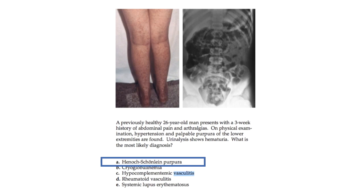Complications of Henoch-Schönlein purpura include hypertension, glomerulonephritis, and GI hemorrhage. The imaging shown demonstrates dilated loops of bowel suggesting large bowel obstruction, likely due to intussusception. HSP usually resolves spontaneously after about one week, though it may recur over weeks to months. Treatment is supportive only, and prognosis is generally excellent in children but worsens with increasing age.